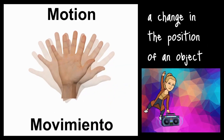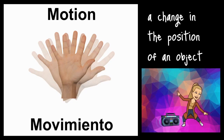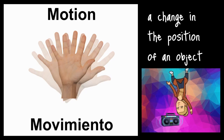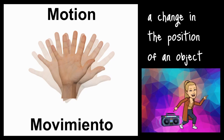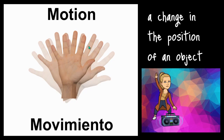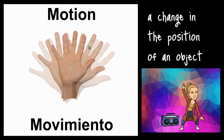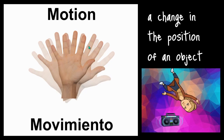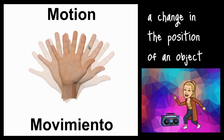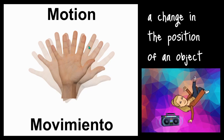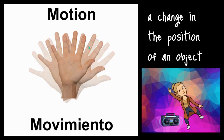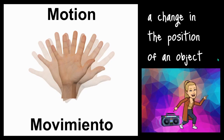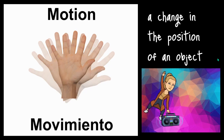The next word is motion. Motion is a change in the position of an object. Over here we see somebody moving their hand back and forth, making a waving motion. When you wave hi or wave bye to somebody you are making a waving motion. Over here I am showing motion by dancing around the radio.